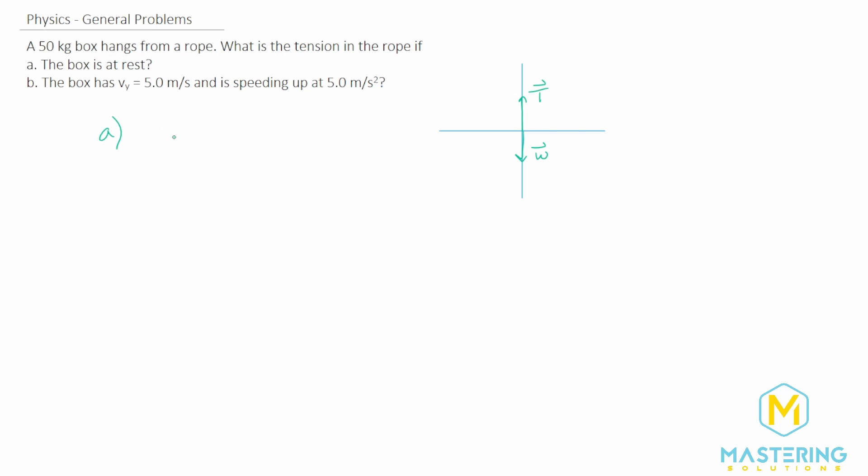So for part A, they tell us that the box is at rest, meaning it's at static equilibrium. It's not moving or accelerating in the y direction at all. So acceleration in the y direction is zero. If we sum the forces in the y direction, we have positive tension minus negative weight, and it's going to be equal to zero because it's in static equilibrium.